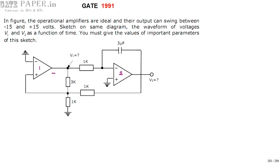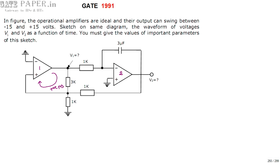Feedback is nothing but a part of the output connecting back to the input side. The output of op-amp 1 is connecting back to the non-inverting terminal, so this type of feedback is called positive feedback. If the output connects back to the inverting terminal, that is called negative feedback. Now op-amp 1 has positive feedback.